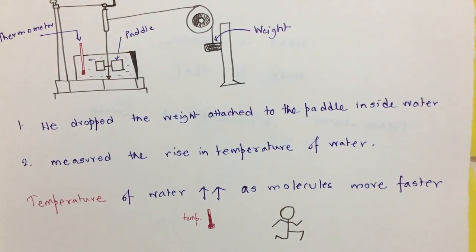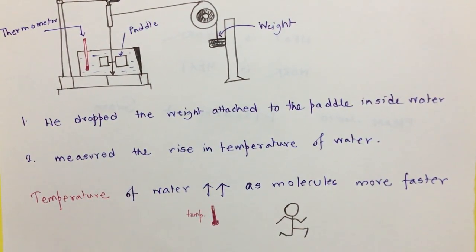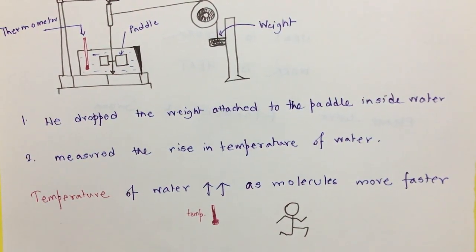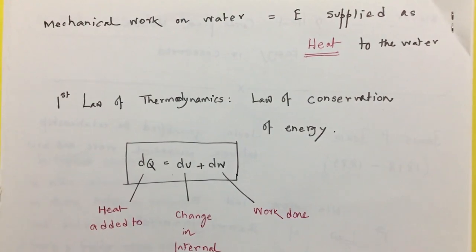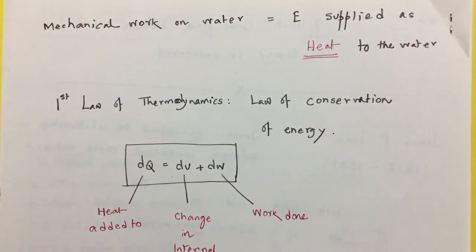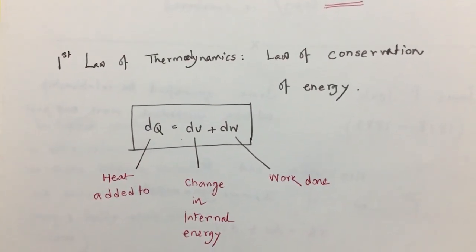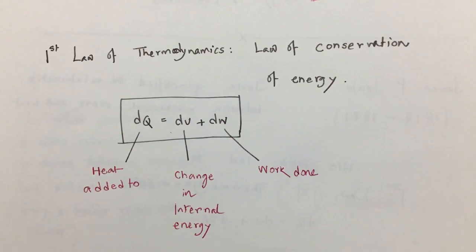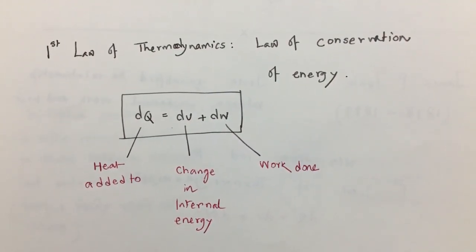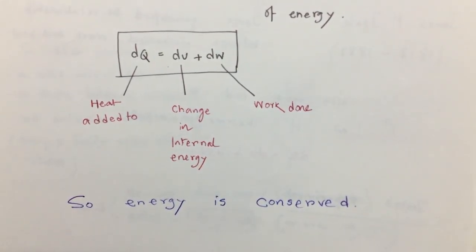What he concluded is that the water molecules are now moving faster, so temperature of water is now increasing because of the faster moving molecules. So what Joule observed is the mechanical work done on water is equivalent to or equal to the energy supplied as heat energy to the water. And this is basically the first law of thermodynamics, which is the conservation of energy, which tells us that heat added to the system equals change in the internal energy plus work done on the system. So this is the quantification of the thing that energy is conserved.